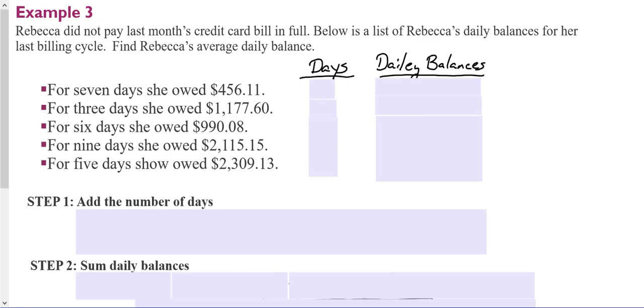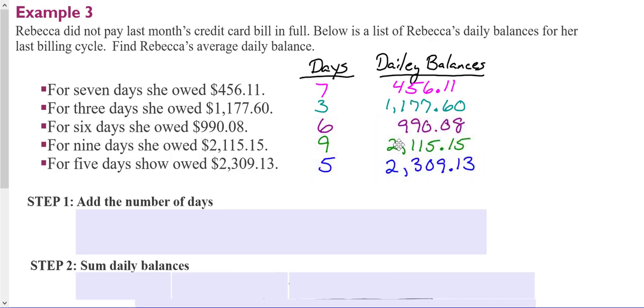For 7 days she owed $456.11. I would under a days column list the number of days, and then under daily balances I would list what the balance was for each of those days. So in this case it was 7 days at $456.11 each day. For the next line it's 3 days, so it would be 3 days and she owed $1,177.60. And I would do that for each of the other days in the billing cycle.